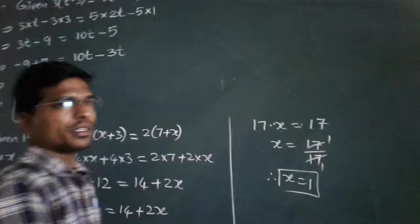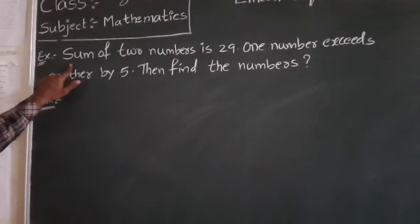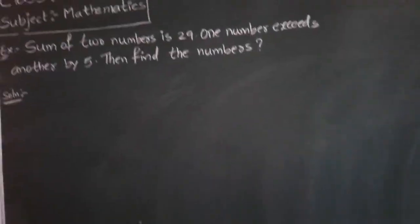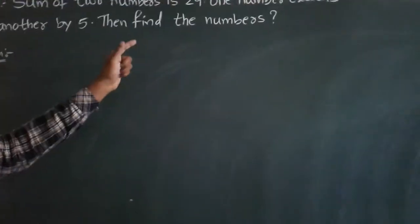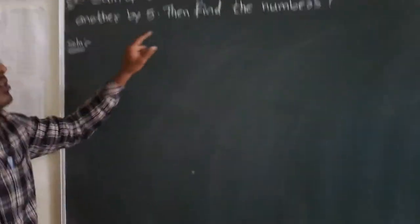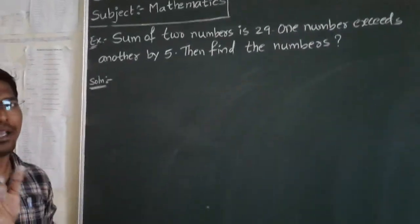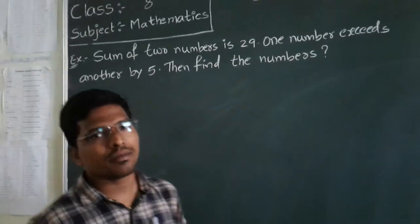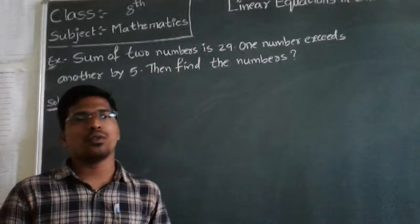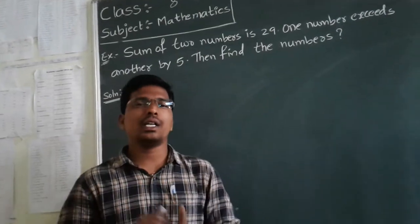This is the way of solving problems in linear equations in one variable. Now let's discuss one more problem — a word problem. The sum of 2 numbers is 29, and one number exceeds another by 5. We have to find the numbers.